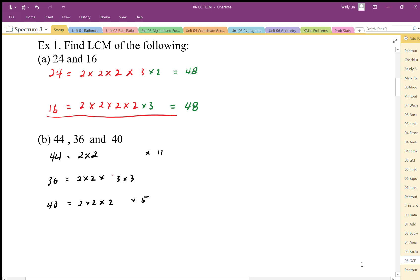If I look at the 36 I'm missing a 2 from here and I'm missing a 5 from here and I'm also missing an 11. So that would represent our lowest common multiple: 2 times 2 times 2 times 3 times 3 times 3.